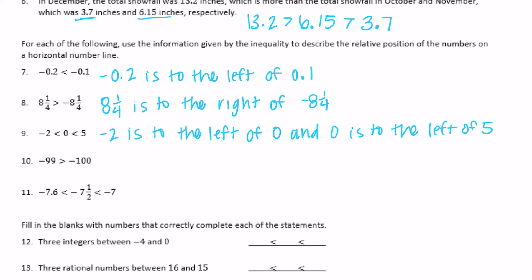Negative ninety-nine is greater than negative one hundred. Since it's greater than, negative ninety-nine would be to the right of negative one hundred.